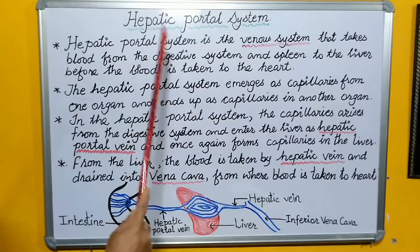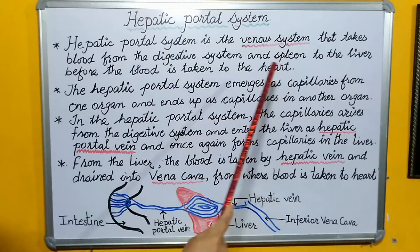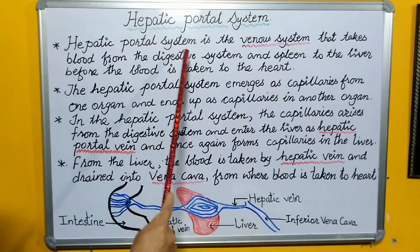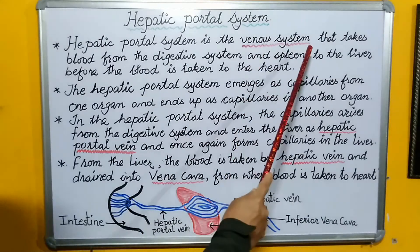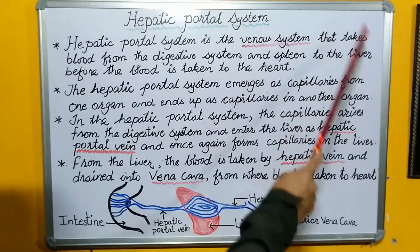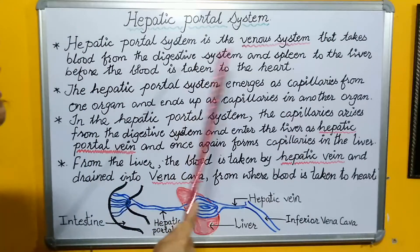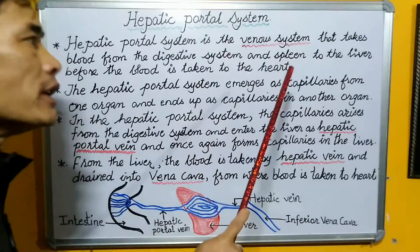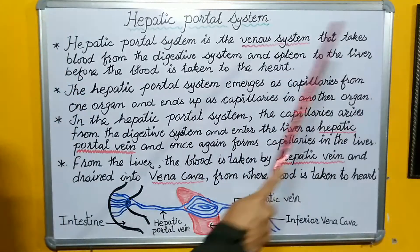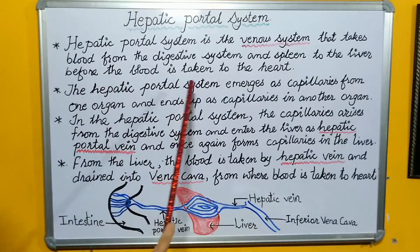The hepatic portal system, since it is a portal system, is a venous system that takes away blood from the digestive system and the spleen to the liver before the blood is taken to the heart.